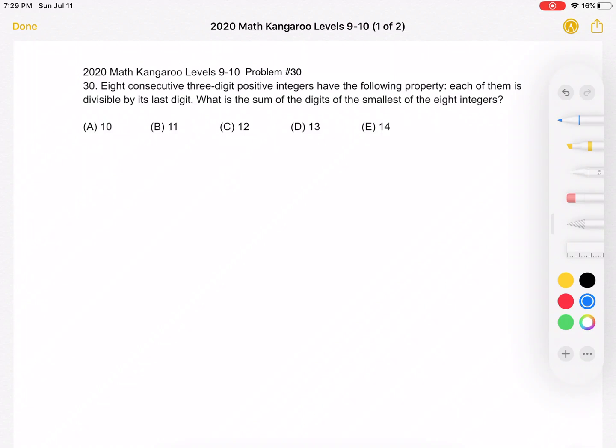This is the 2020 Math Kangaroo Levels 9-10, problem number 30. Eight consecutive three-digit positive integers have the following property: each of them is divisible by the last digit.